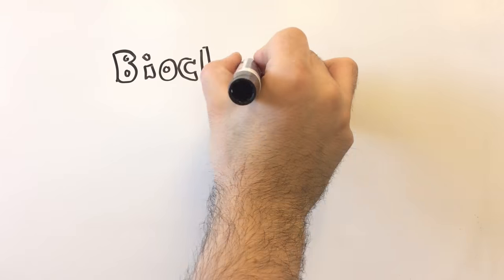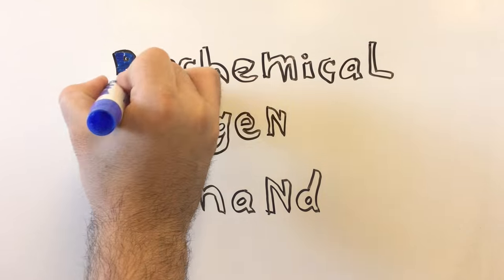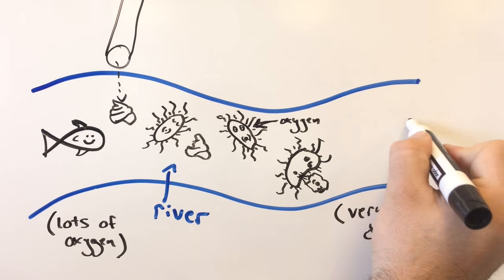This consumption of oxygen is called biochemical oxygen demand, or BOD for short. If it's too high, aquatic animals like fish can suffocate and die.